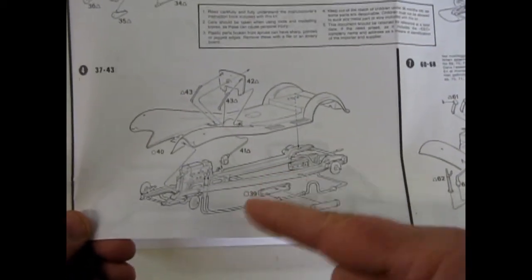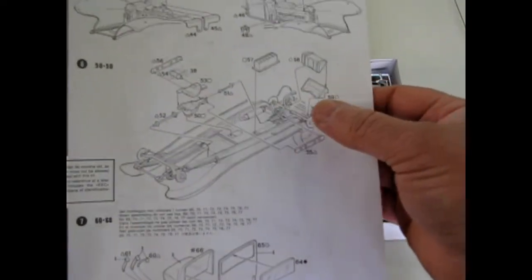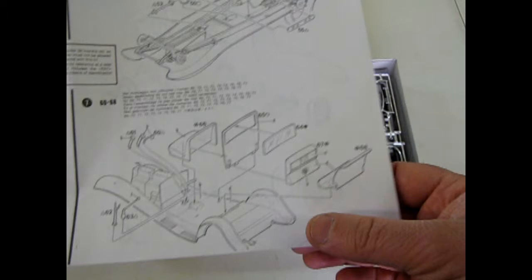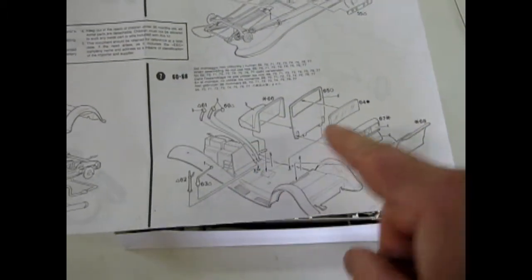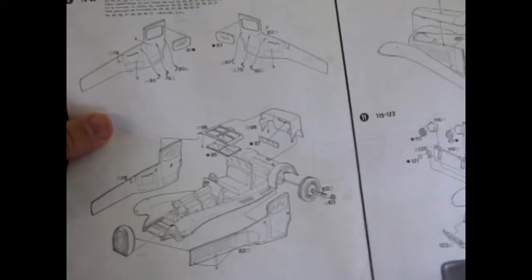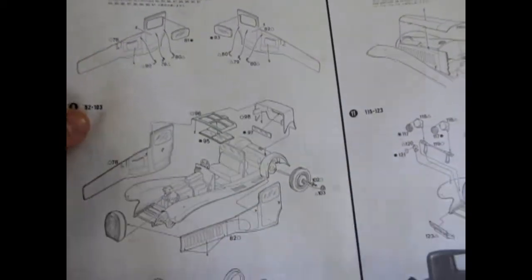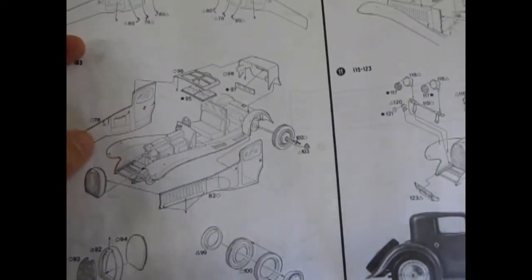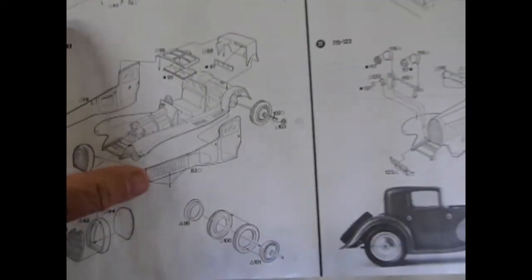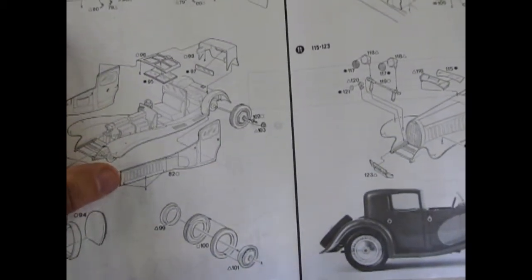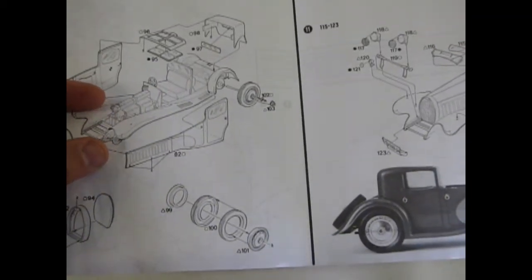And there is the frame and the fenders going on. As well as here and our interior. And the little partition wall separating the chauffeur from the passenger, which was a popular body style back then. And there's our body panels going on. There's our body panels going together.